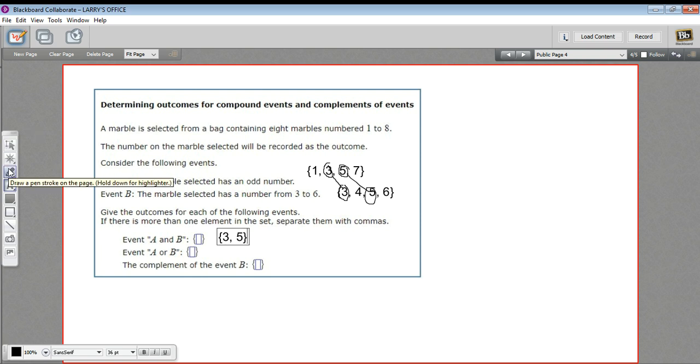All right, let's look at A or B. Let me get rid of these markings. So A or B means the number can be in A or it can be in B. So it's basically all of these. So an or, you just throw them together. So let's write that out. So one, three, four, five, six, seven. And I think that's everything. Yeah, looks like it.